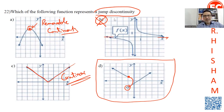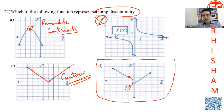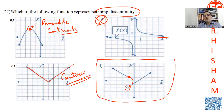To summarize: we have removable discontinuity, a continuous function, infinity discontinuity, and jump discontinuity. You should know the graph of each one of them.